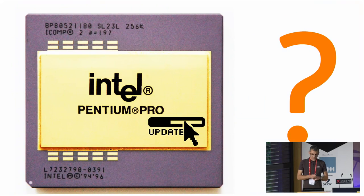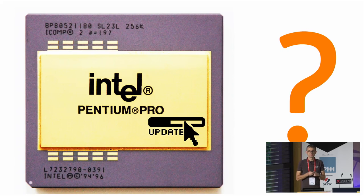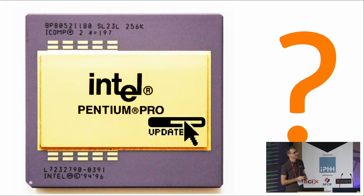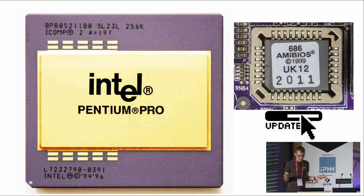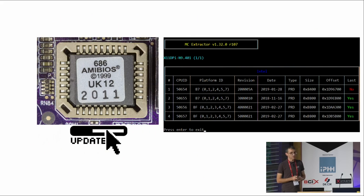They wanted to get features from software and provide updates to the hardware in the form of microcode updates. The question that arises is: what kind of permanent storage does a CPU have to store this kind of software? The answer is none — there is no permanent storage in the processor. So the solution, back in 1995 and 1999, was to store the microcode in the BIOS. Twenty years later we are still in the same situation — the microcode is still in the BIOS.